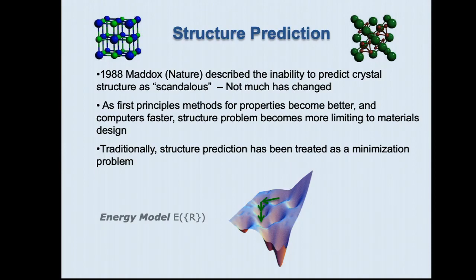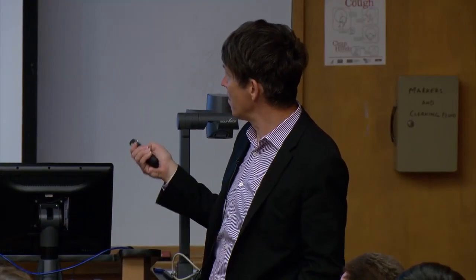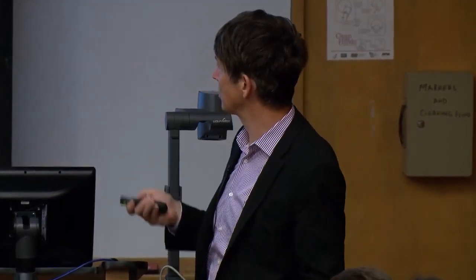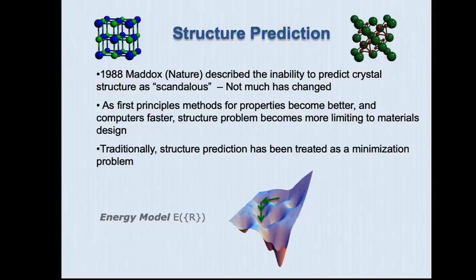Given a composition, what's the stable crystal structure? First-principles theory was very late to this problem. In 1988, Maddox — the senior editor of Nature — described the inability to predict crystal structure as a scandalous thing in materials science. We probably are in a somewhat better situation now. We always think of structure prediction as a minimization problem, because it's either the state with the lowest energy or free energy at finite temperature.